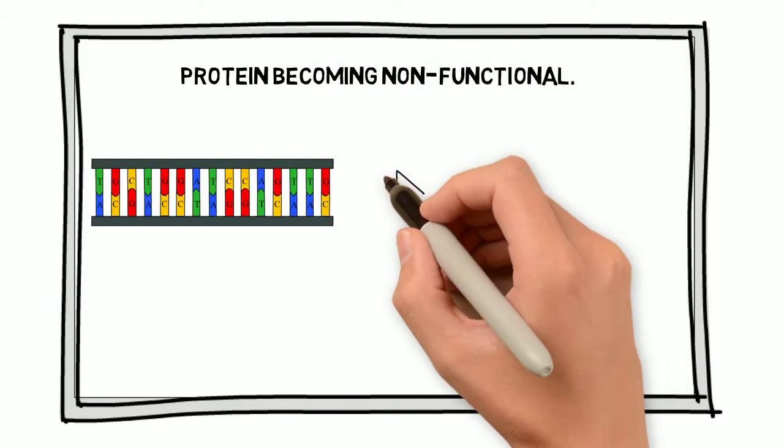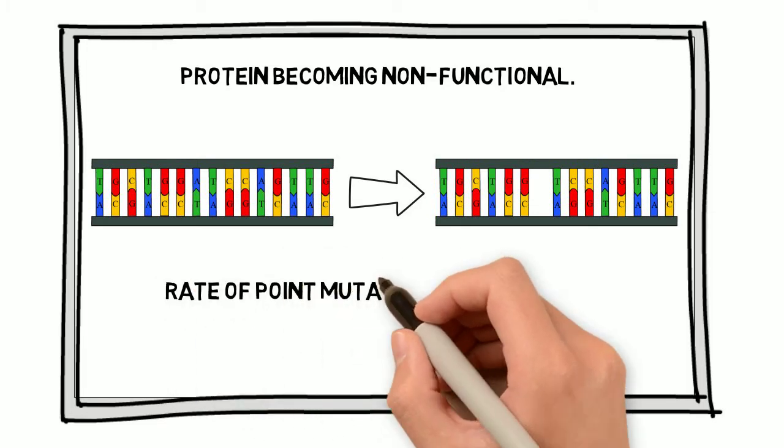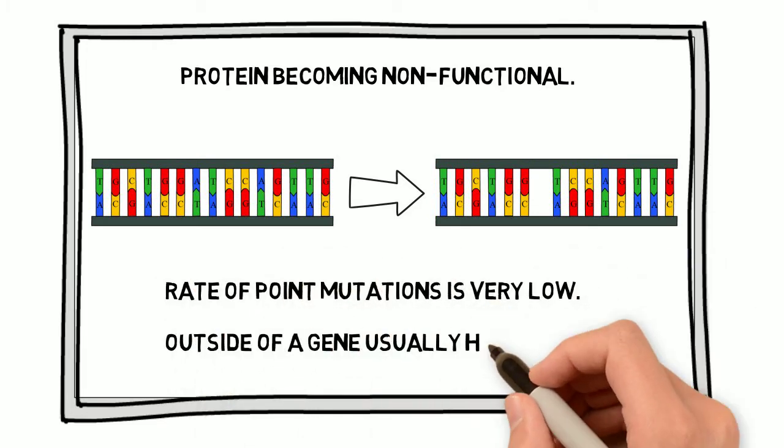However, the rate of point mutations is very low, and the ones that occur outside of a gene usually have little to no effect.